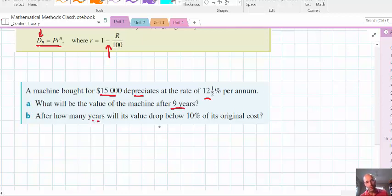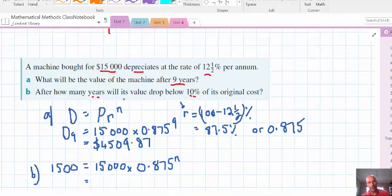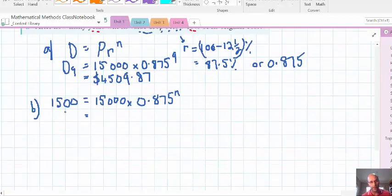Let's really quickly now look at an example. A machine bought $15,000. Depreciates at the rate of 12.5% per annum. What will be the value be? What will the value be after nine years? And then how many years will it take? After how many years will its value drop? In other words, below 10% of the original cost. So, here we go. We've got the formula written. We've got to find D sub 9, 15,000 times. Okay, let's work out the interest rate. There it is. So, 0. The decay factor, in other words, 0.875. And we have 9 there. So, it's a simple matter of calculating now that everything's been subbed in. So, that machine's worth $4,509.87 after nine years.